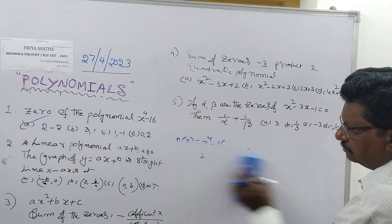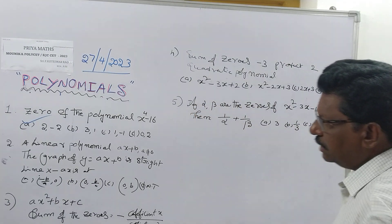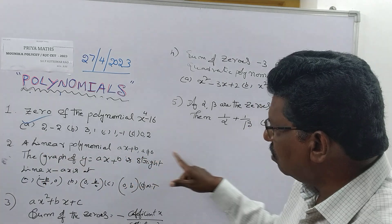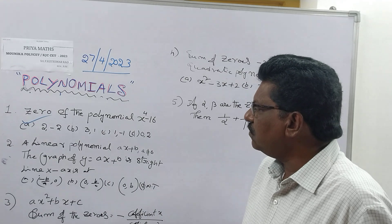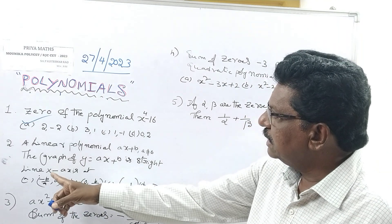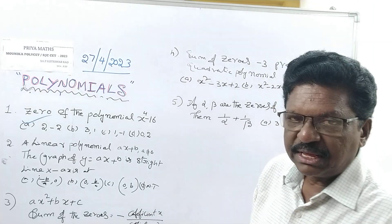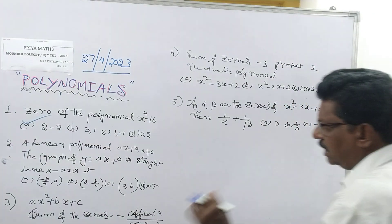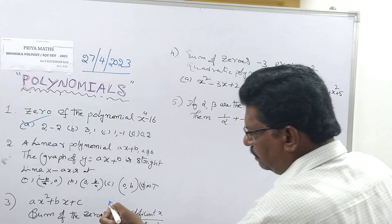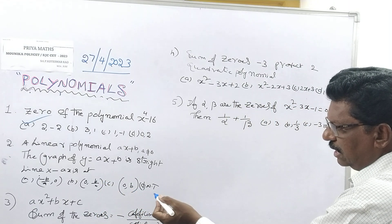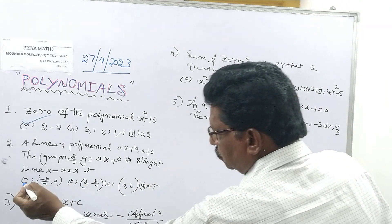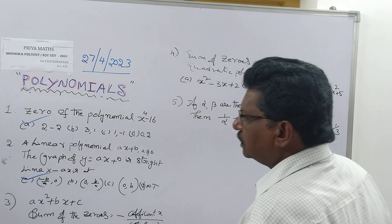Second one: a linear polynomial AX plus B, where A is not equal to 0. The graph of Y = AX + B is a straight line. The x-axis intercept means where X = minus B by A. Not (0, B/A) or (0, B). So option A is the right option.